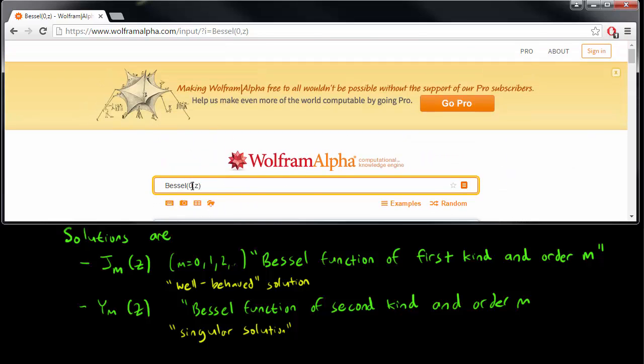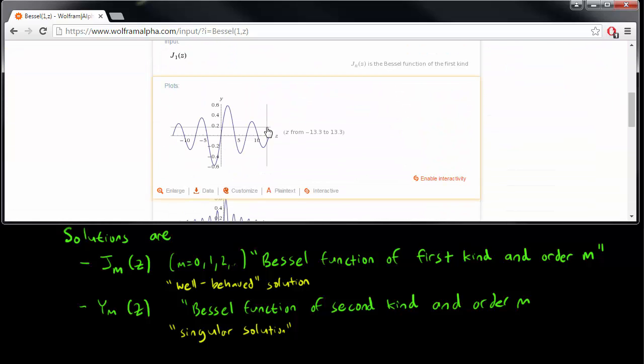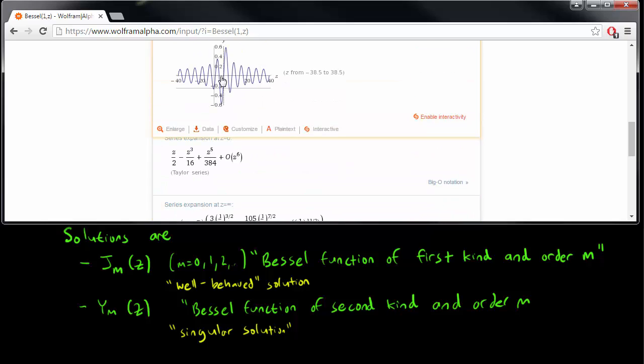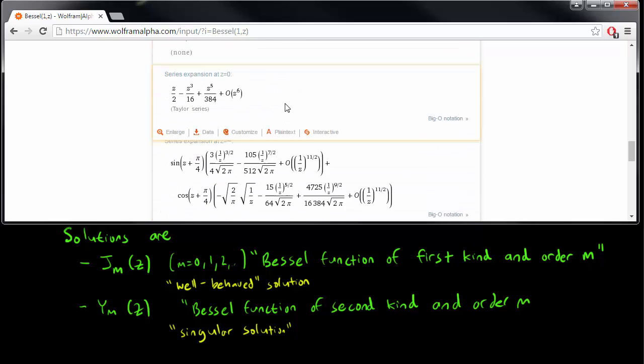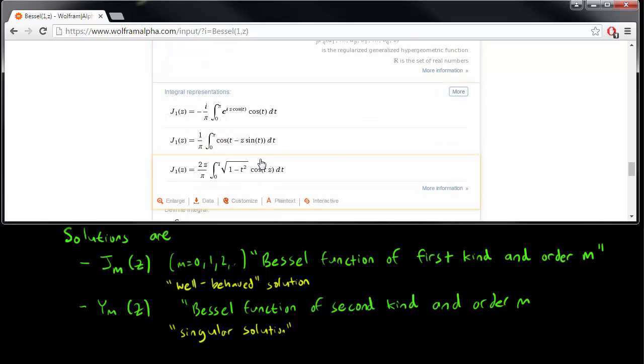And of course, you can look at the J_1(z) case. I'll give Wolfram Alpha a little bit of time. As you can see, it looks roughly the same. You always have this oscillation that decays as z goes to infinity, and you have all these integral representations too, if you care about them. There they are.